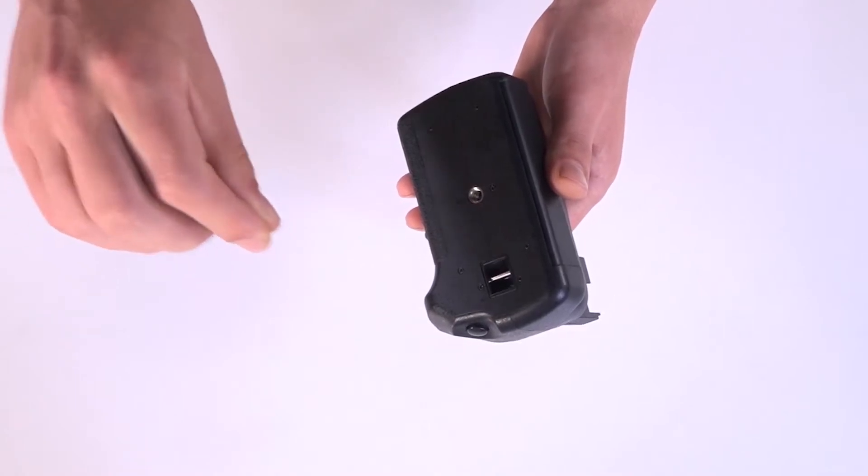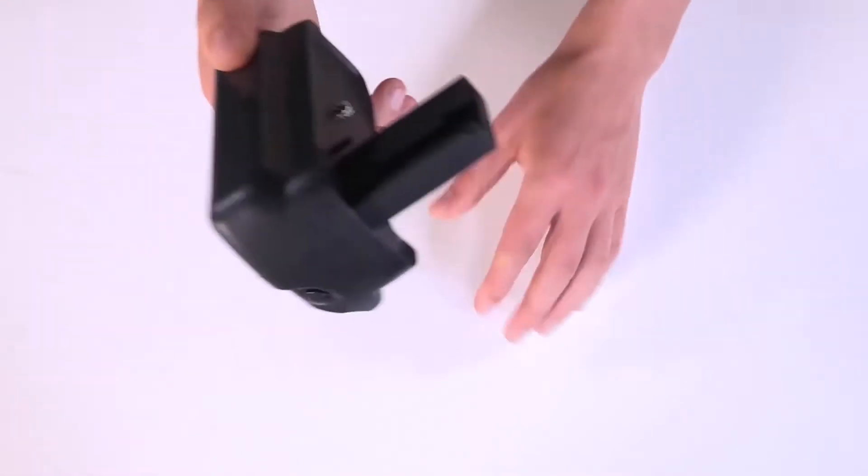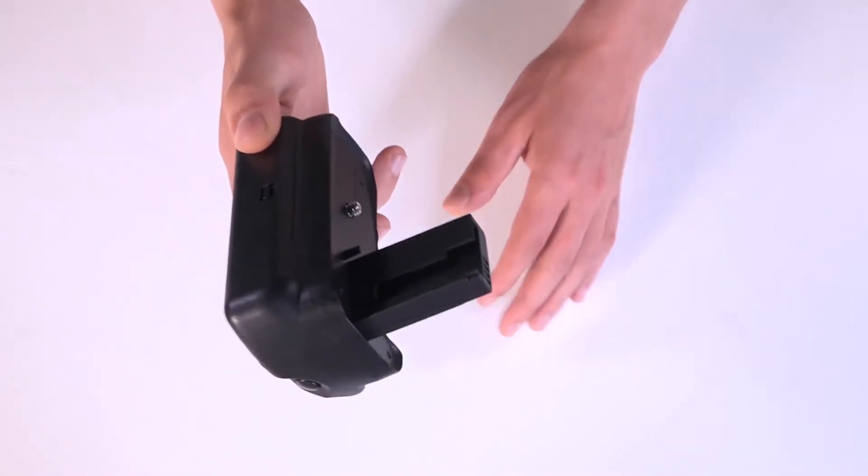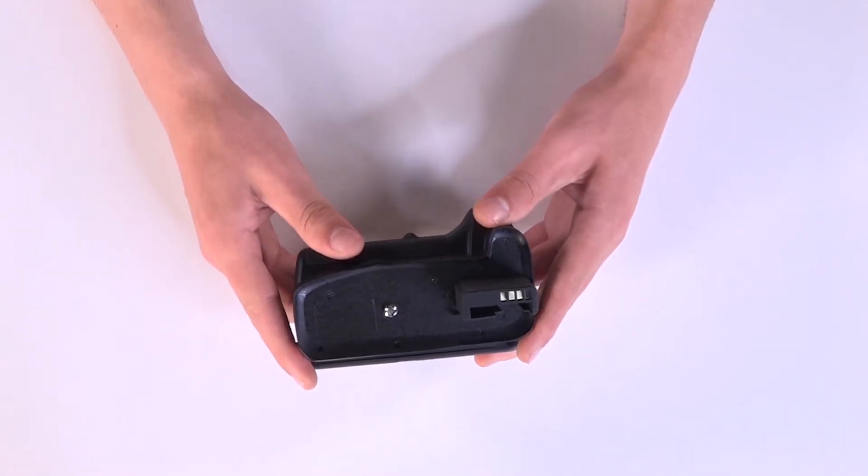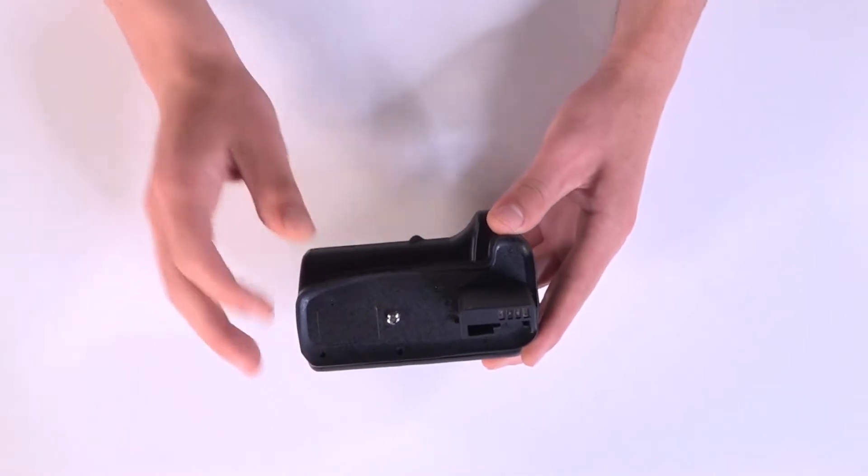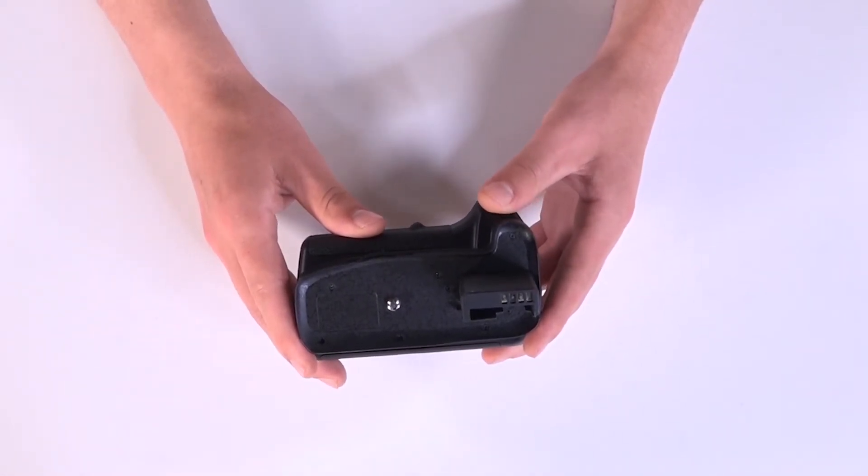And here's a small space so that you can put the wire and so that your camera doesn't fall off. The first thing you have to do when you put the extra battery is to switch off your camera.